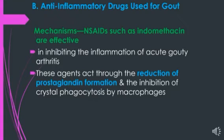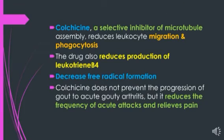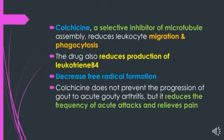Colchicine acts by inhibiting granulocyte migration into inflamed joints and phagocytosis. Colchicine causes metaphase arrest. Other drugs causing metaphase arrest are vinca alkaloids, epothilones, and taxanes. The most common and dose-limiting toxicity of colchicine is diarrhea. It can also cause kidney damage, myopathy, and bone marrow depression.